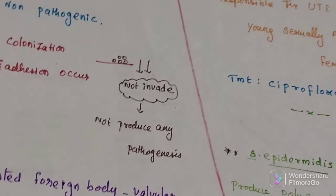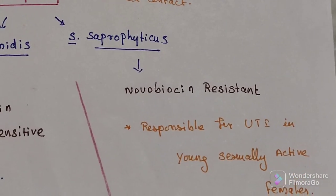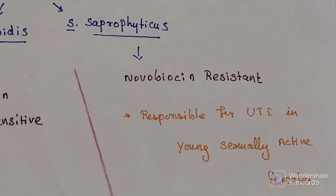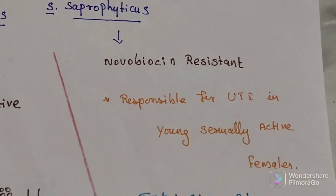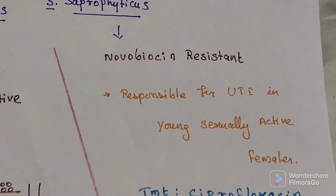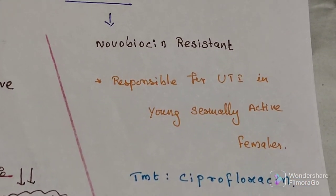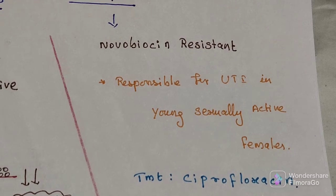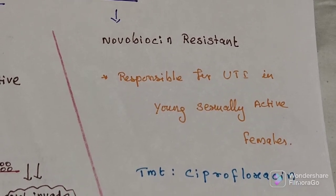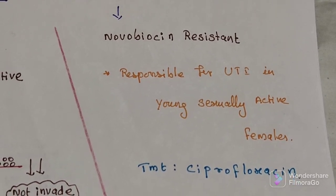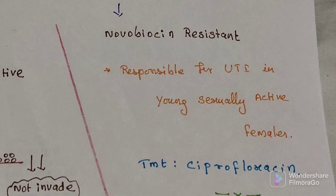Next is Staphylococcus saprophyticus. This organism is responsible for urinary tract infections in young sexually active females. For treatment, we use ciprofloxacin.